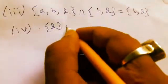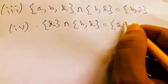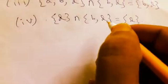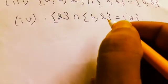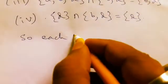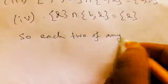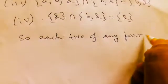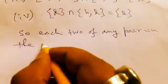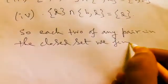For case four, {d} intersection {b,d} gives {d}. So each two of any pair in the closed set, we find non-empty intersection.